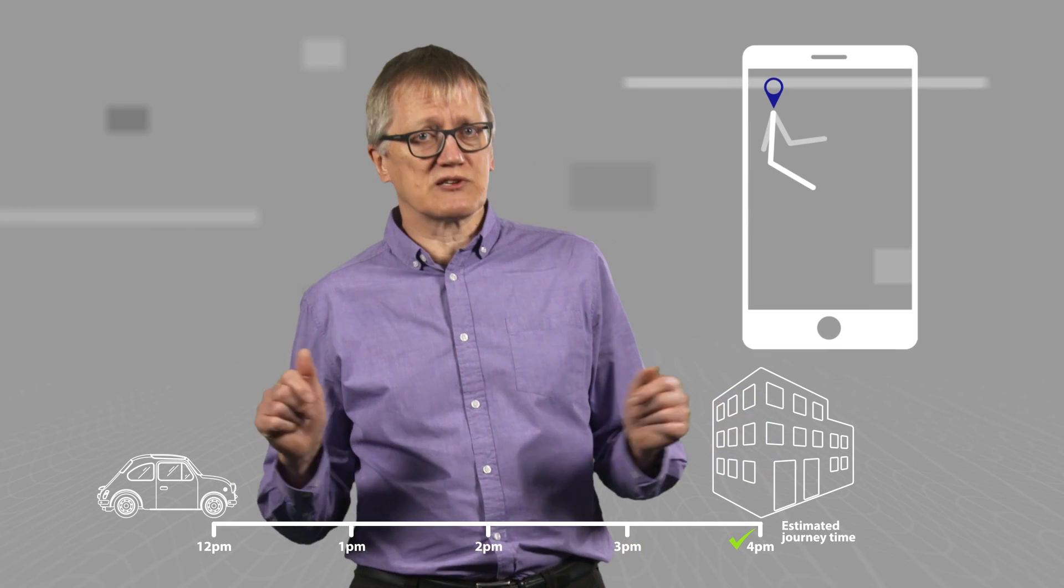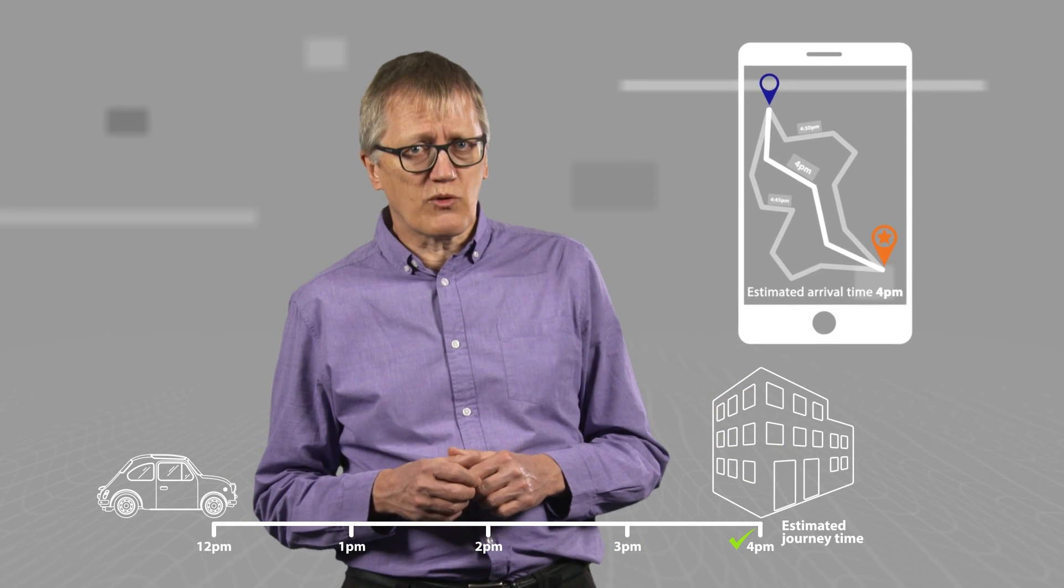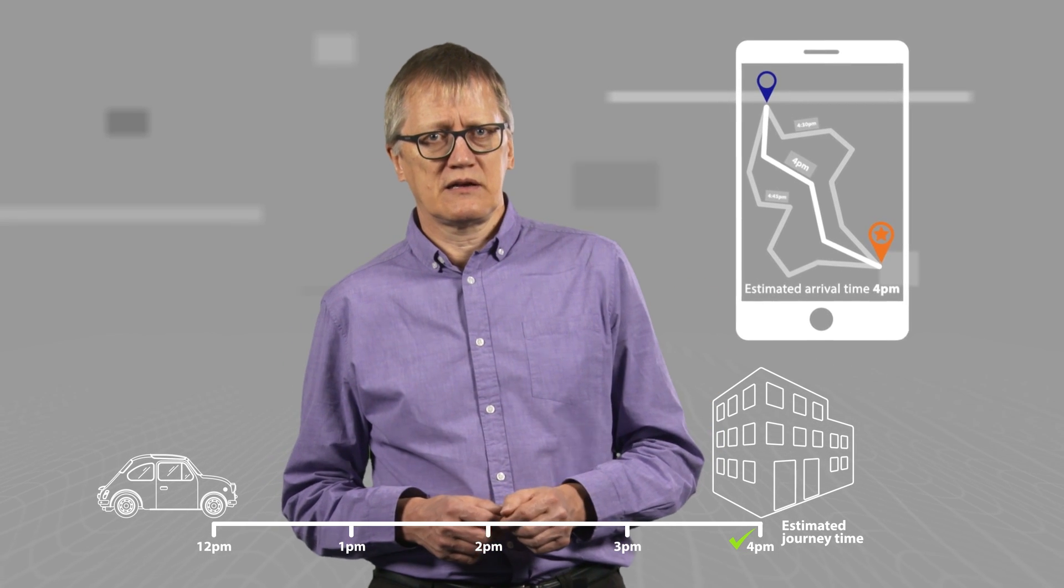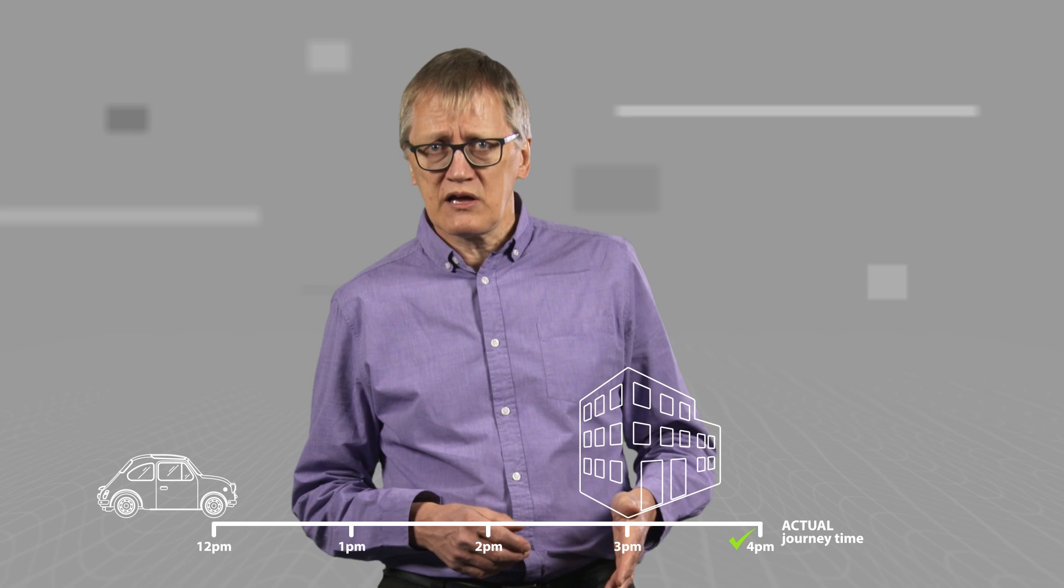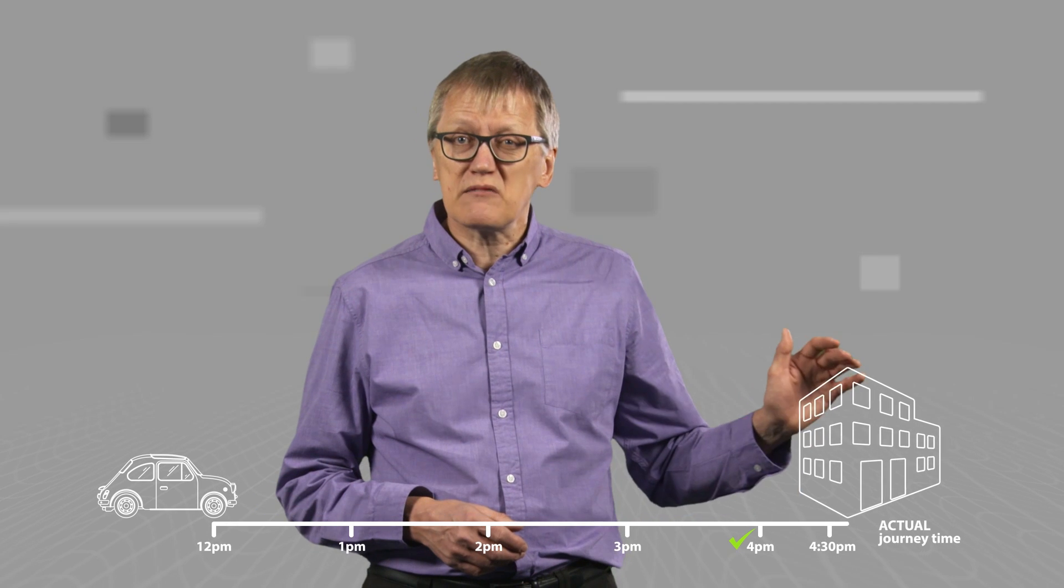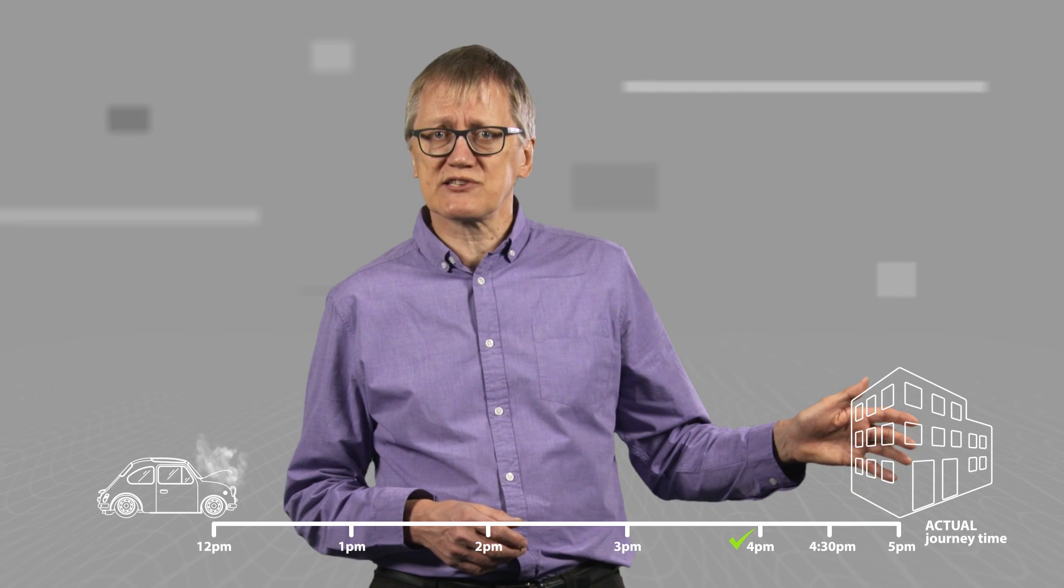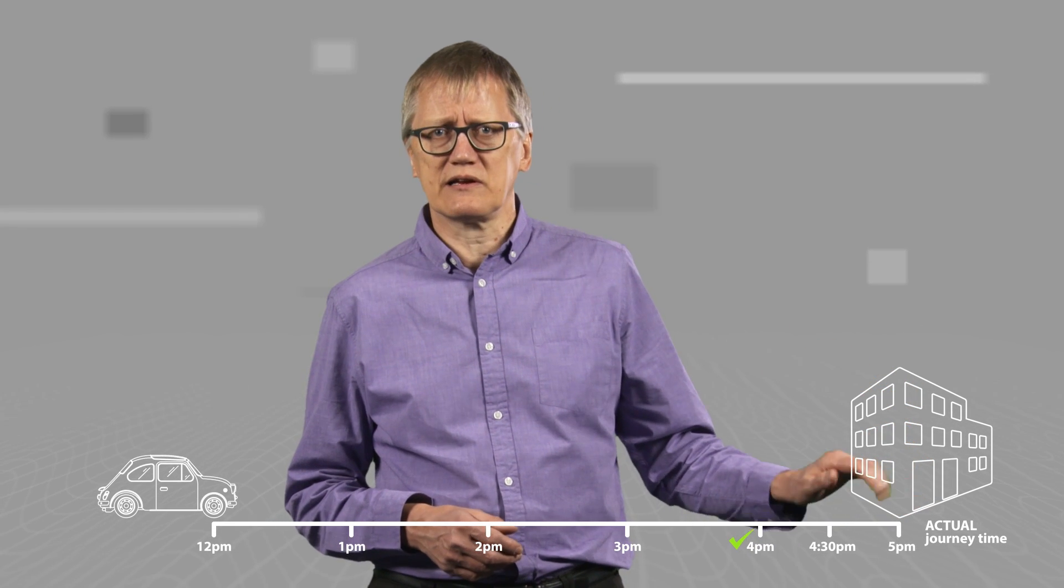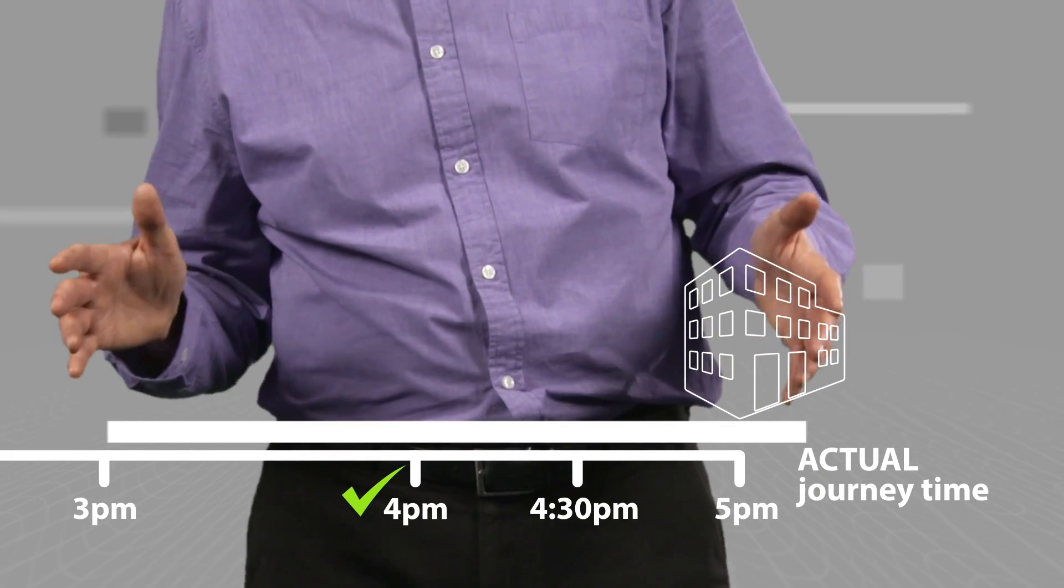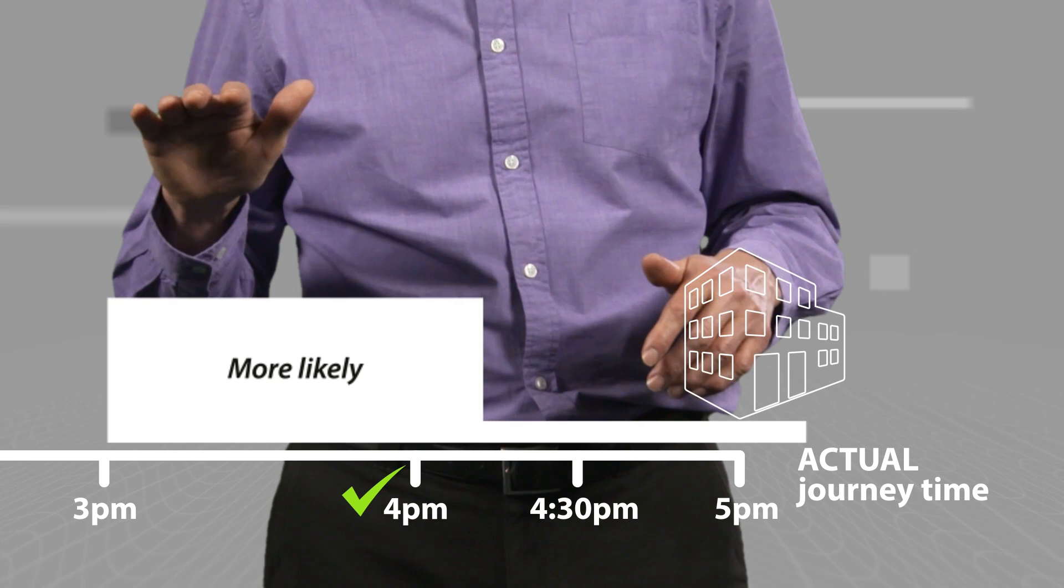You might get an estimate of the journey time from a travel website, but it will rarely be precisely correct. The actual time might be shorter if the journey goes well or longer if there's more traffic. It might take much longer if our car breaks down, but that's less likely. So there is a range of possible times the journey might take and some are more likely than others.